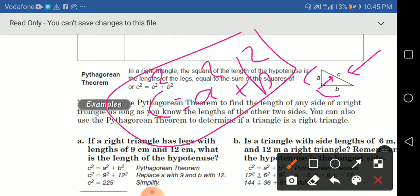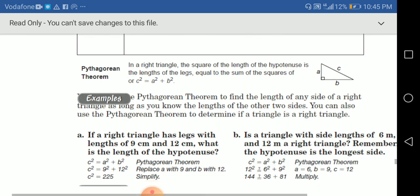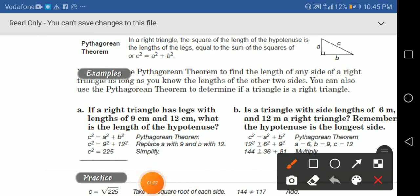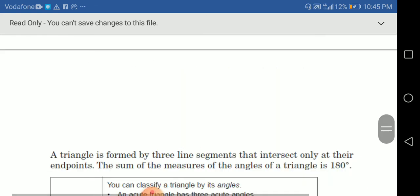So this rule, it's only for the right triangle. This here happens only on the right triangle. So the Pythagorean Theorem, to find the length of any side of the right triangle, as long as you know the length of other two sides, you can also use the Pythagorean Theorem. So let's have example to see what we are talking about.